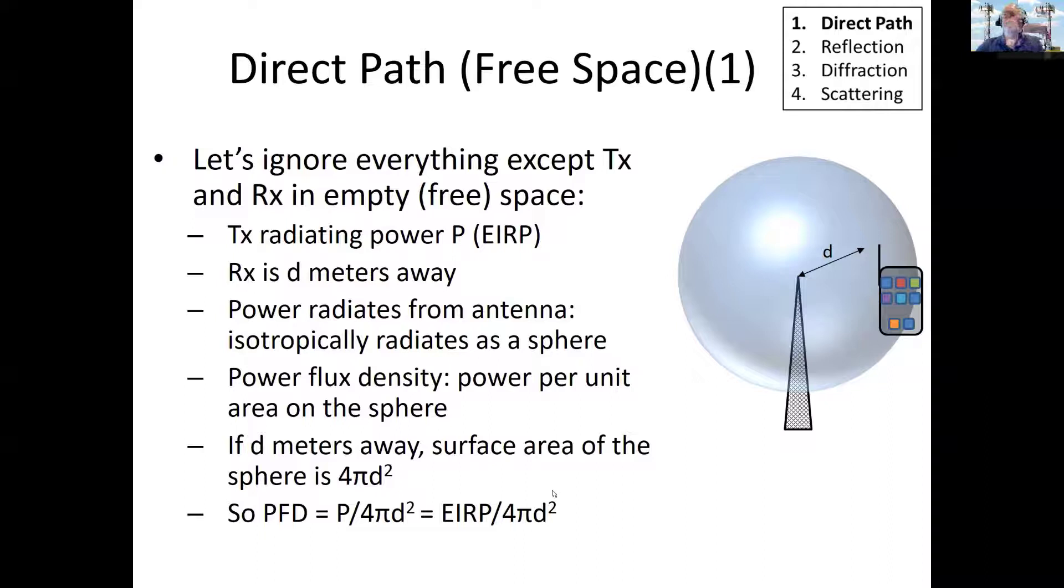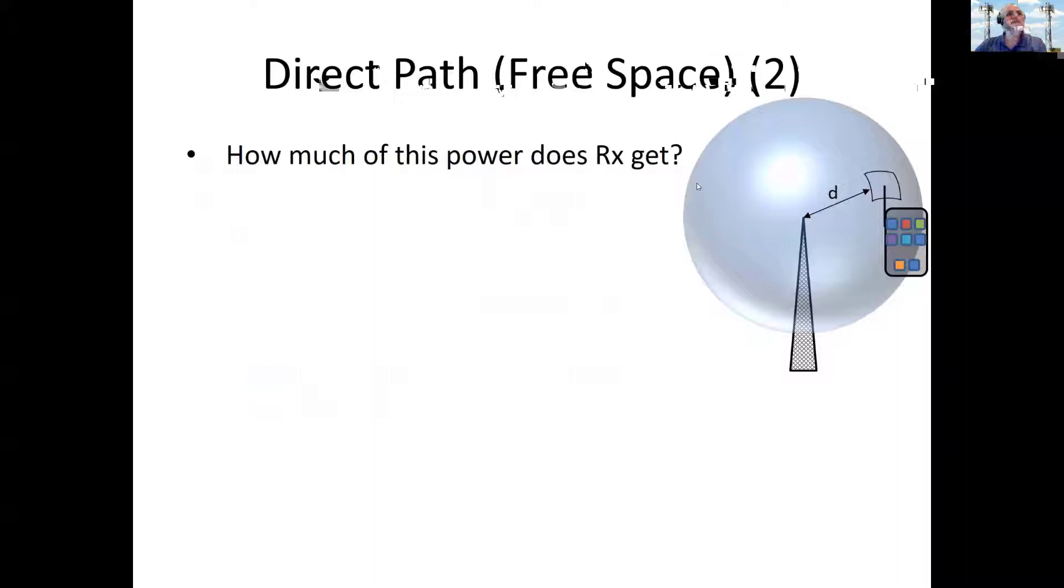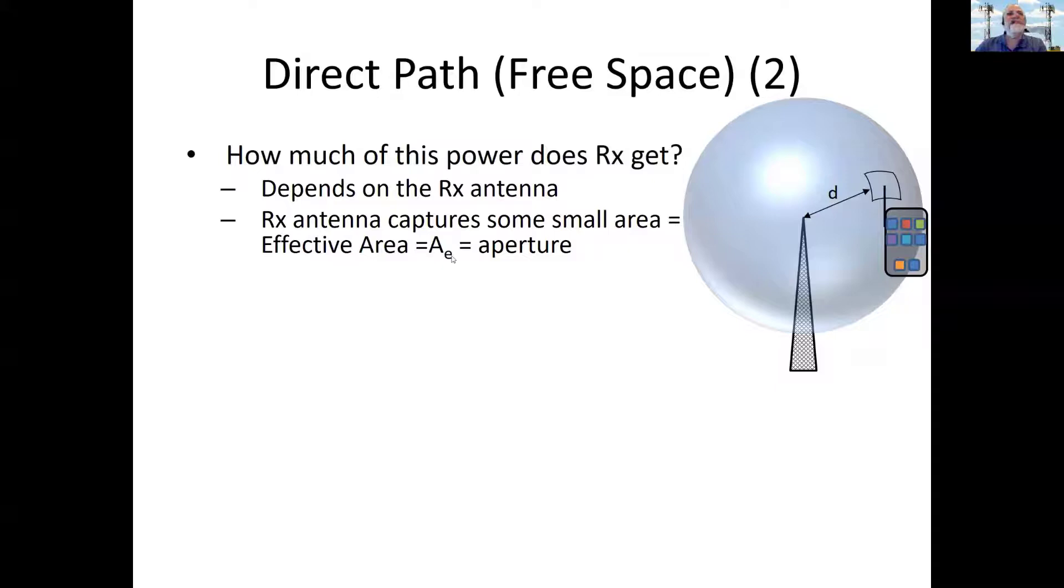And what am I going to get? Well, the surface area of the sphere, the volume is pi D cubed, but the surface area is 4 pi D squared. And you're going to get power on the surface of the sphere. And so the power density, what they call the power flux density, is EIRP over 4 pi D squared. So what happens at the receiver? Well, the receiver has to capture some little piece of this. The receiver is going to try and capture a little piece of this.